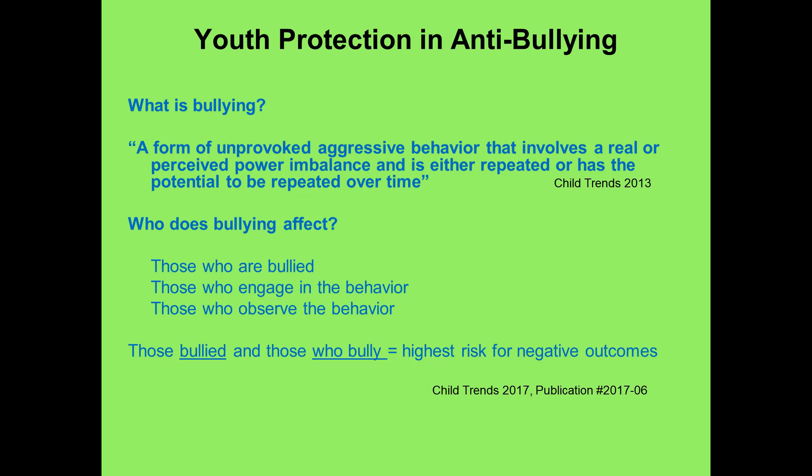So what is bullying? Bullying is a form of unprovoked aggressive behavior that involves a real or perceived power imbalance. Those that it affects — who does bullying affect? It can affect the ones who bully, the ones who are bullied, and the ones who observe that behavior.